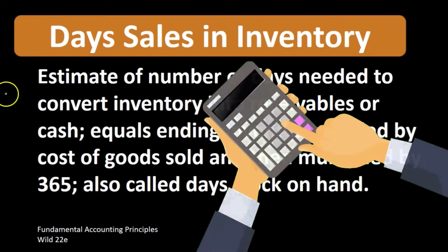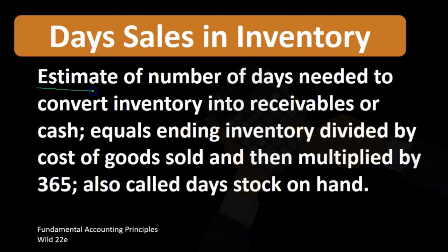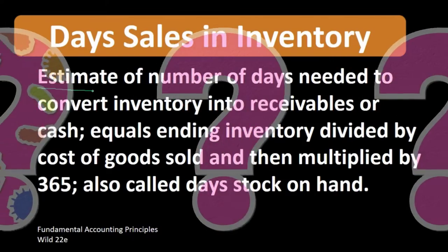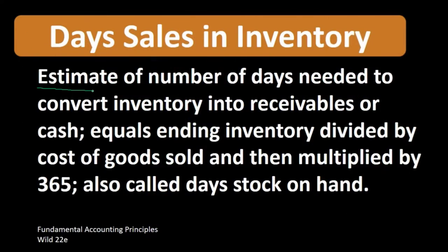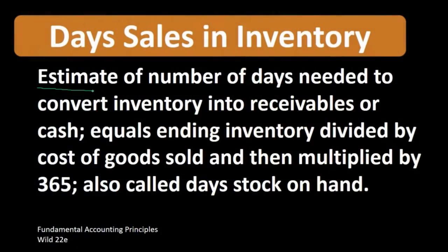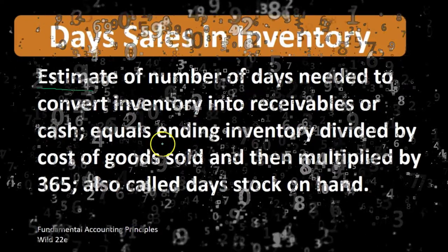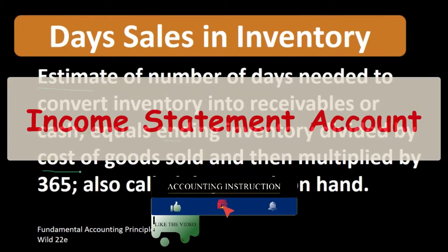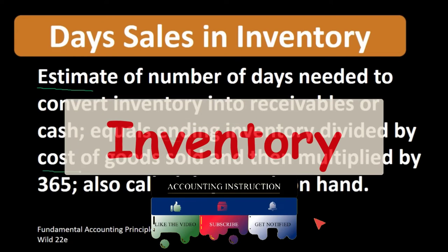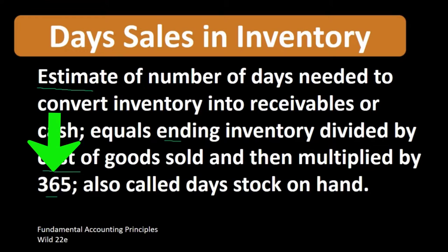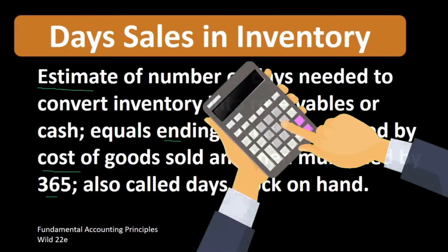So we're doing a calculation here. That calculation is of course going to be an estimate. What we're trying to determine is a rough estimate of how many days it will take to convert the inventory to a sale — that sale being on account in terms of converting to a receivable, or for cash. The numbers we will be using will be the ending inventory, the balance sheet account, and the related cost of goods sold, the related income statement account related to inventory, and the number of days in the year — that being 365 — in order to calculate day sales in inventory.